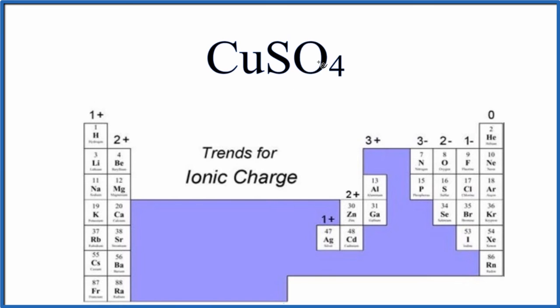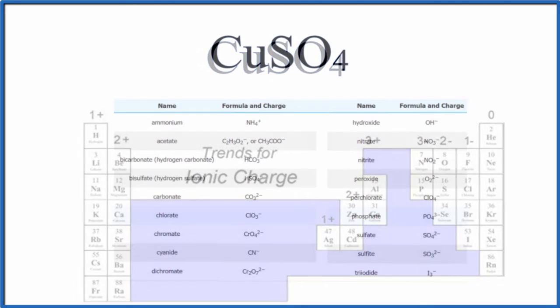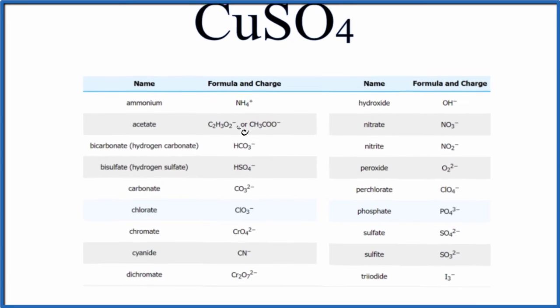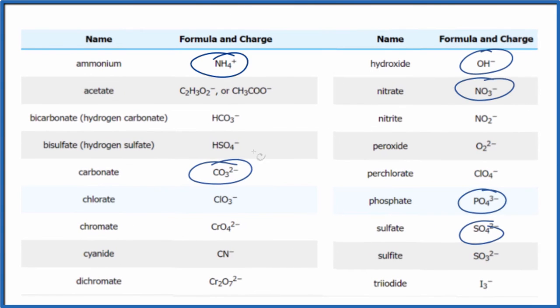Let's try naming a compound with a transition metal and a polyatomic ion. So we have CuSO4. You're not going to find SO4 on the periodic table. That's a polyatomic ion. So let's take a look at a chart of polyatomic ions. Here's a list of some of the polyatomic ions. I recommend you memorize these. There's a link to this table in the description.